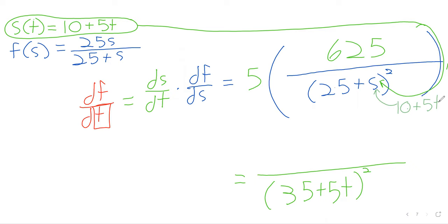So we have 25 plus 10 gives us this 35 and then plus this 5t. In the top, we have 5 times 625. Can someone give that to me? 31, 25. And we have done the problem and found the derivative.